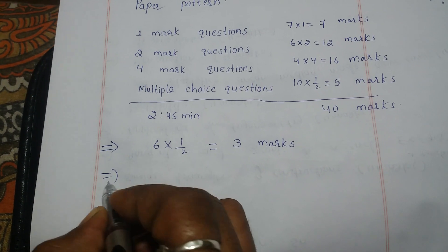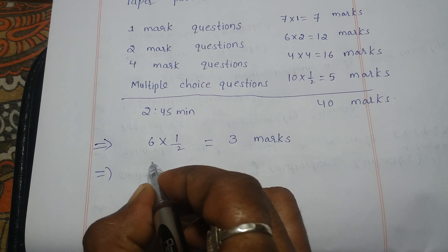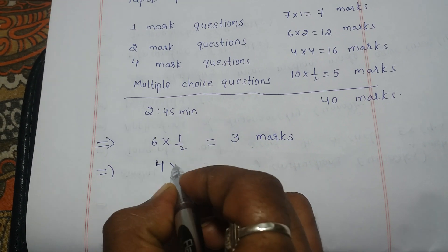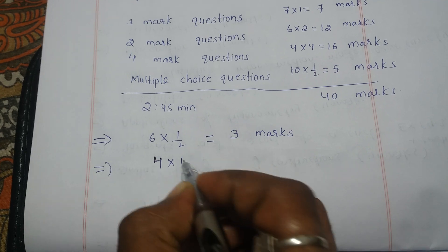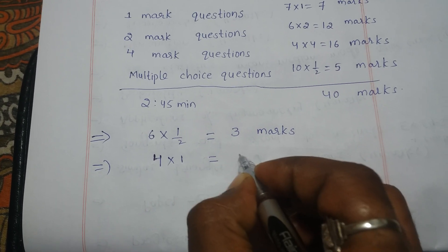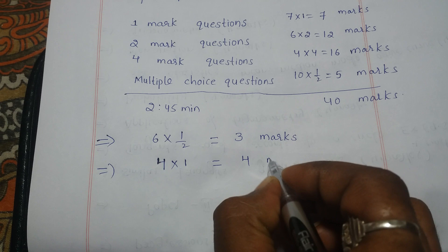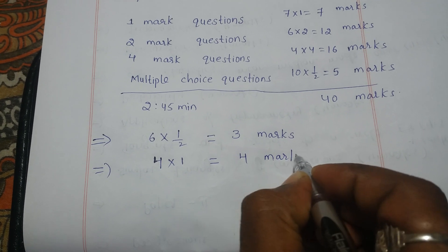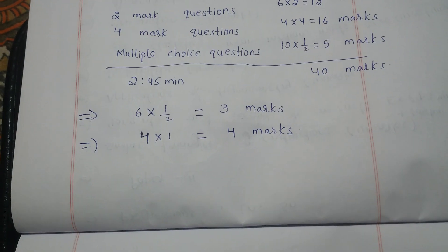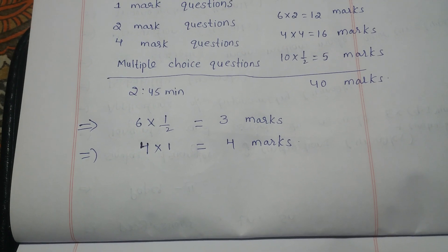For four-mark questions, four are there. If you attempt, you will get one mark for each four-mark question just for writing the given statement and what we have to do. So you will get four marks for attempting the four-mark questions.